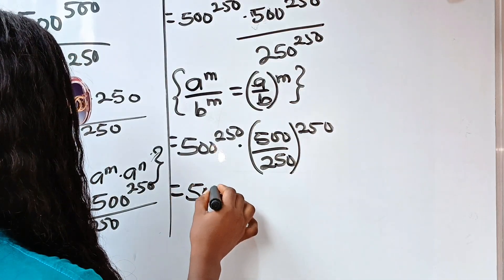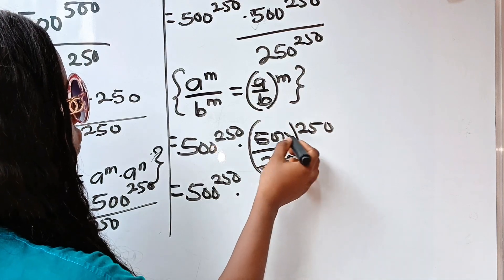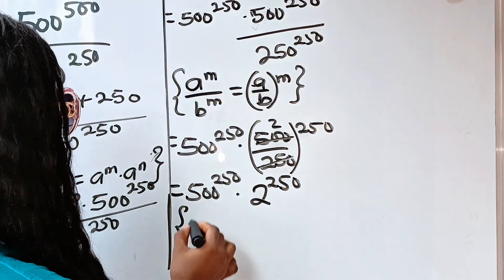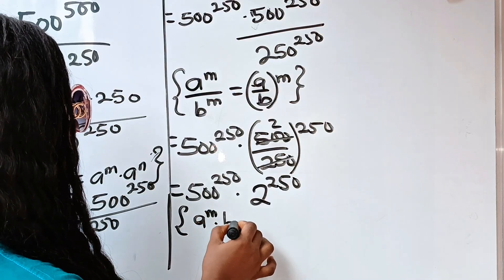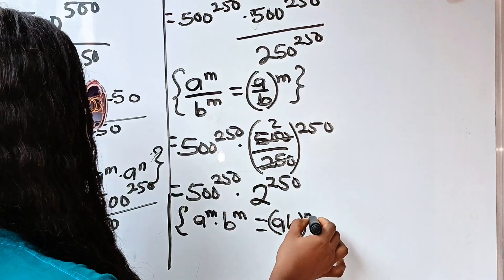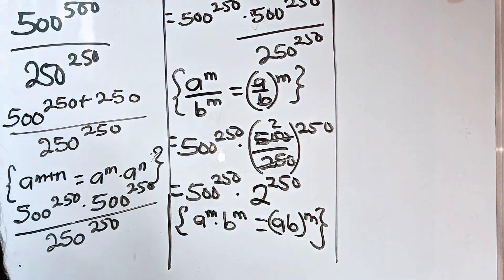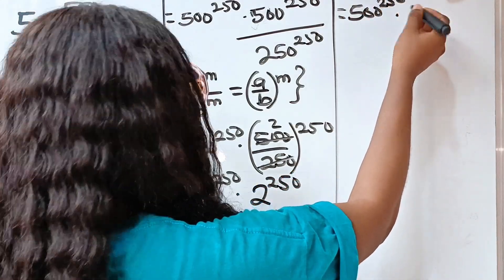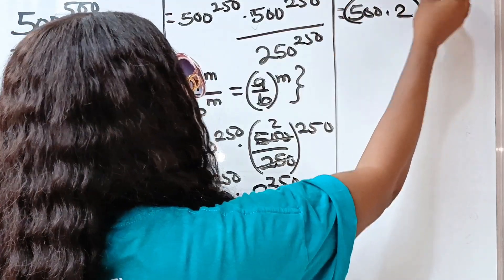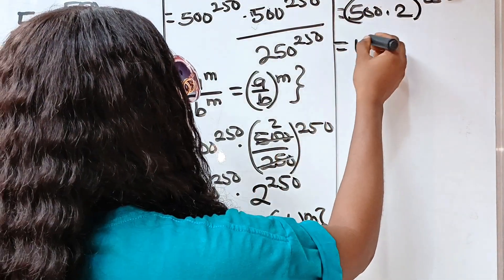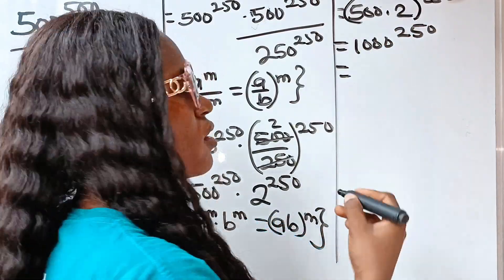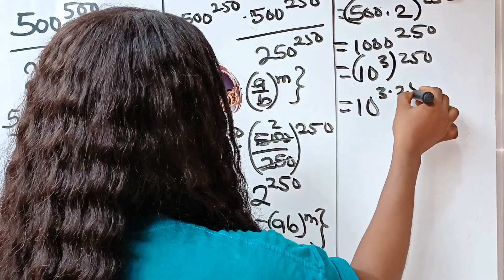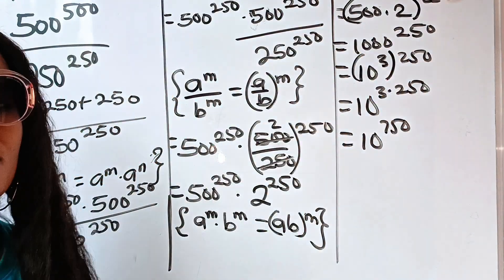Remember that (a/b)^m = a^m ÷ b^m. So we solve this as 500^250 multiplied by (500/250)^250. Since 500 divided by 250 equals 2, this becomes 500^250 multiplied by 2^250. Using the rule a^m × b^m = (ab)^m, we can write this as (500 × 2)^250, which equals 1,000^250. This is 10^3 raised to the power of 250, so it is 10^(3×250) = 10^750 — the same answer as the first method.